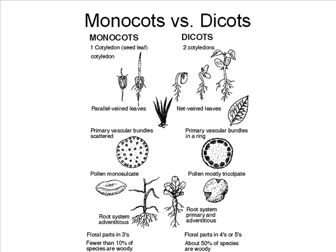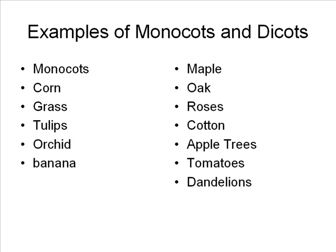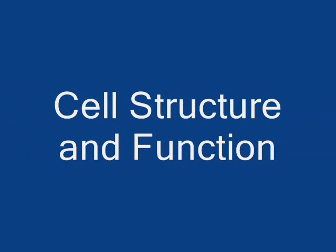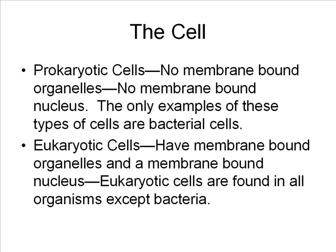Fewer than 10 percent of all monocot plants have wood, whereas about 50 percent of dicots are woody. Common examples of monocot plants are corn, most grasses, tulips, orchids, and bananas. Common examples of dicot plants include maple trees, oak trees, roses, cotton plants, apple trees, tomatoes, dandelions, and many other of the most common plants familiar to us.